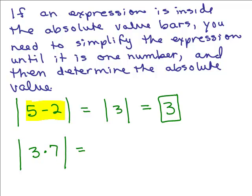Here's another example. We've got the absolute value of something that just isn't a single number. So what you're going to have to do is determine, first of all, what that number is. You have to simplify it. So in this case, it's a multiplication. So I have to do 3 times 7, which is 21.